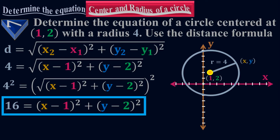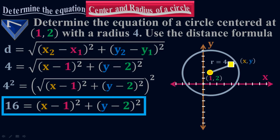The border point is x comma y. The circle is centered at 1 comma 2: my h is 1, which is the x value, positive 1 along the x axis, and my y value is 2, positive 2 along the y axis, which is my k. This is the center of the circle, 1 comma 2, with radius 4. Everywhere you take any point on the border of the circle, it will be 4 points away from the center of the circle.